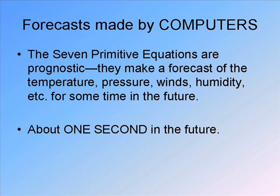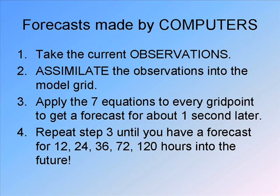You might think, what's the point of a forecast for five seconds in the future? Well, this becomes part of a loop. The methodology for a computer forecast is: take the current observations, assimilate them into the model grid, apply the seven equations at each point, and get a forecast. But it's only for maybe a second or five seconds into the future. That's called a time step — you've now made a forecast one time step into the future.